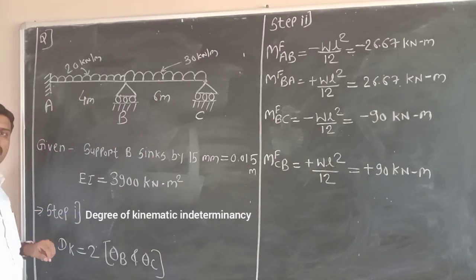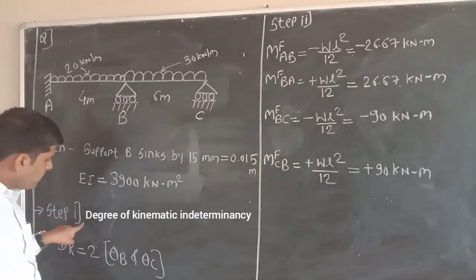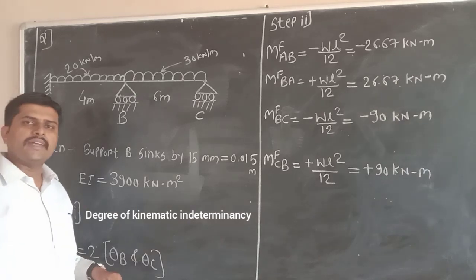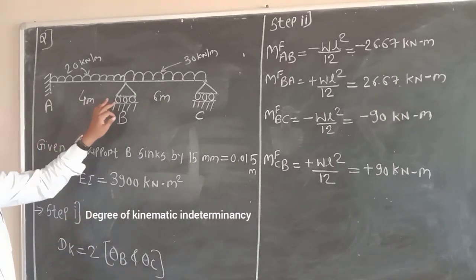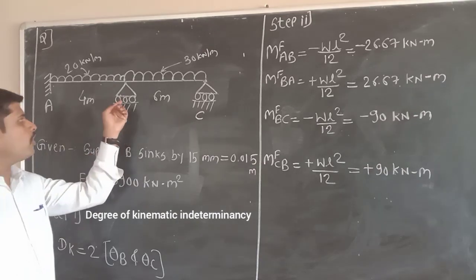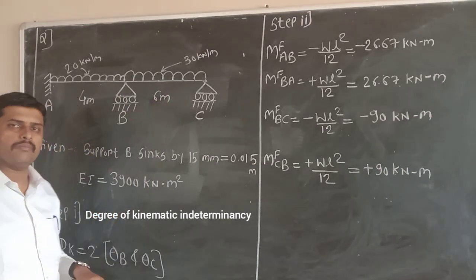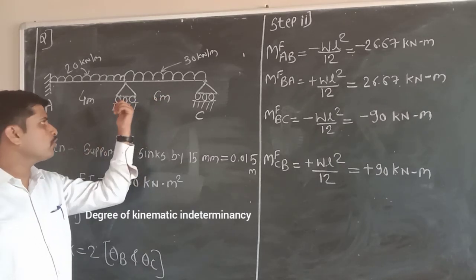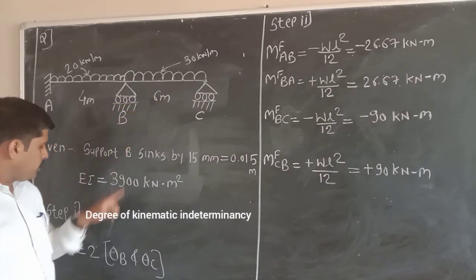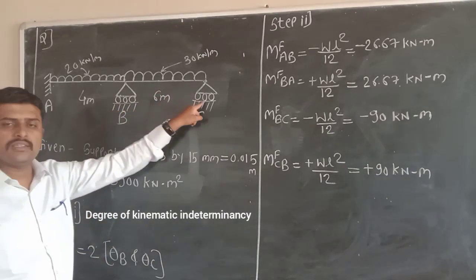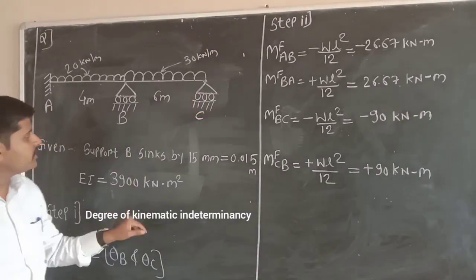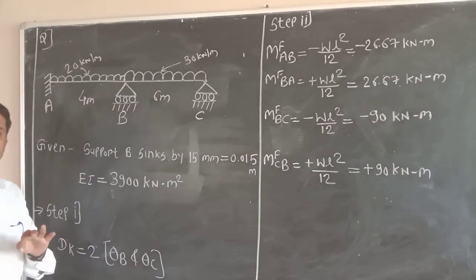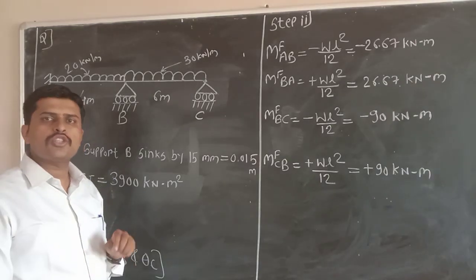Step 1 is to determine the degree of kinematic indeterminacy, which we also call DKI. We count the number of roller supports present in the given beam. There are two roller supports, so DKI will be 2 — that is, theta B and theta C, which are the rotations at B and C. These are the unknowns we have to find with the help of the slope deflection method.